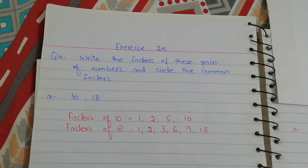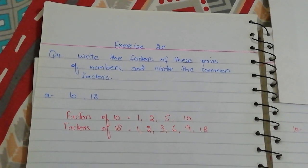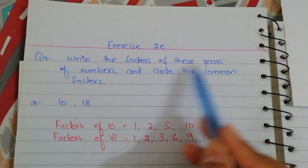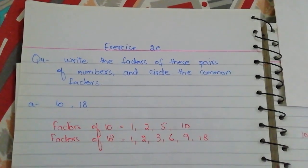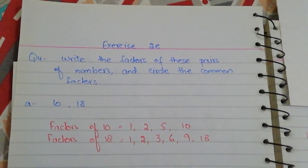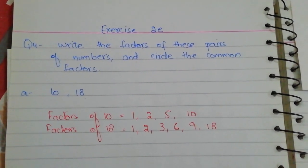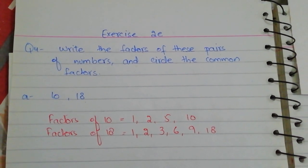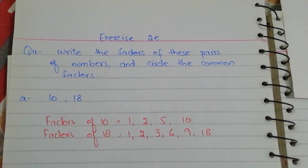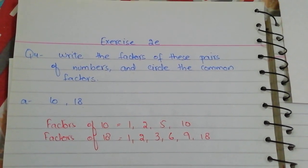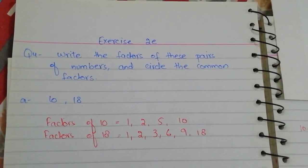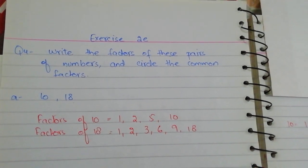Assalamu alaikum. Today we are going to cover question number four of exercise two. In question number four, we write the factors of a pair of numbers and circle the common factors. We are supposed to find the common factors of the given numbers. The factors of any number are actually the numbers that can divide the given number exactly.